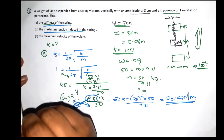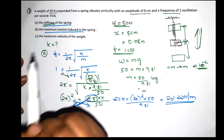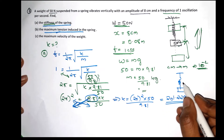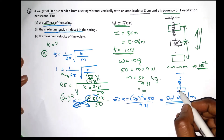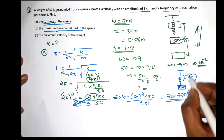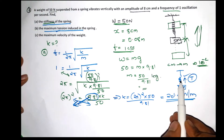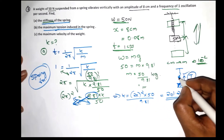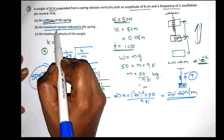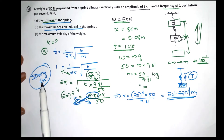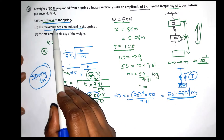For the second question, we find the maximum tension induced in the spring. When we apply a force to the spring, the spring produces an opposing force to return to its original position. This opposing force is called the spring force, and it represents the tension in the spring.